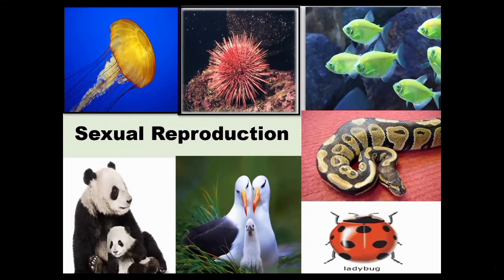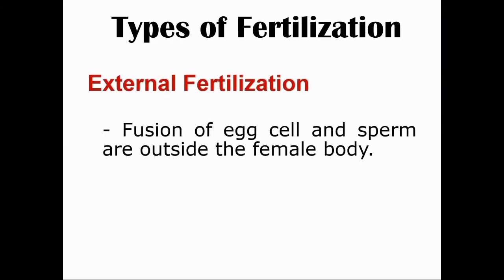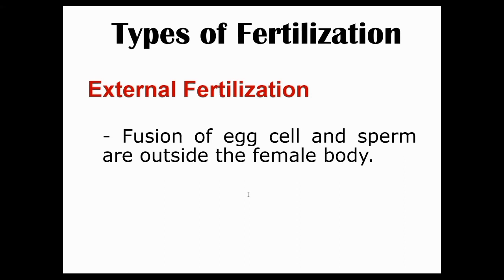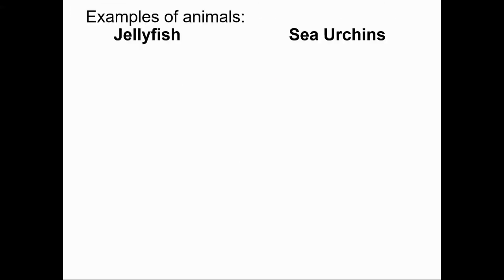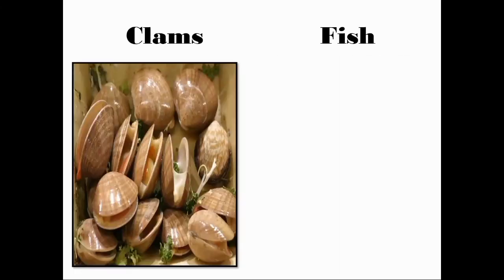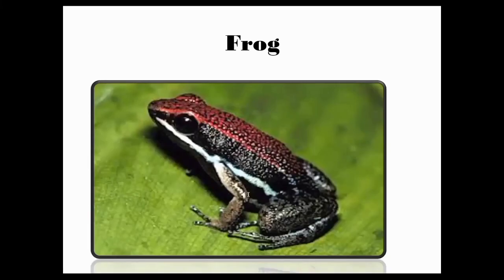Organisms are diverse, unique, and have equally unique features that help them survive in their environment. One unique feature is the way these organisms undergo fertilization. There are two types of fertilization: external fertilization and internal fertilization. External fertilization occurs when the fusion of gametes is outside the female body. The female lays eggs in the water and the male sheds sperm. Think of jellyfish, sea urchins, clams, fish, and frogs — they do not intercourse, but they reproduce sexually through external fertilization.